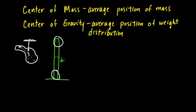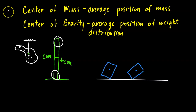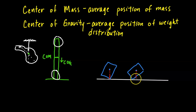For a very tall structure, the gravitational force at the top is less than at the bottom because the gravitational field decreases with distance from Earth's surface. So the top mass weighs less, making the center of gravity slightly lower than the center of mass. In typical situations, the two are treated as the same point. Center of gravity also determines stability: if the center of gravity falls within the base of an object, it won't topple; if it extends past the edge of the base, it will topple over.